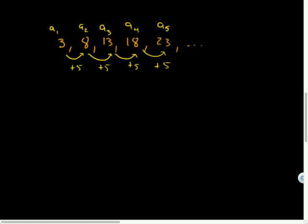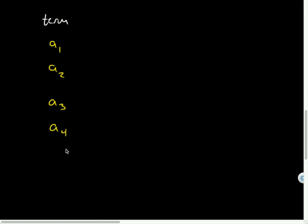So I might make a little chart here. We'll have the term, then we'll have the value. For a sub one, a sub two, a sub three, a sub four. And our goal will eventually be to get all the way down to a sub n.